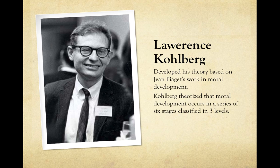He theorized that moral development occurs in a series of six stages that are classified into three different levels. It is a series, so you start at level one, first stage, and then you work your way up to stage six. Certain people stop at certain levels and never fully develop into the later levels.